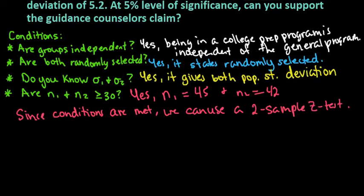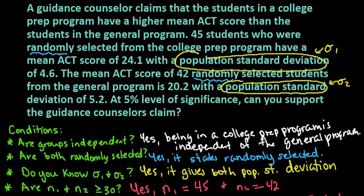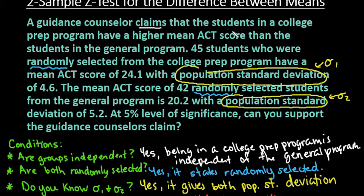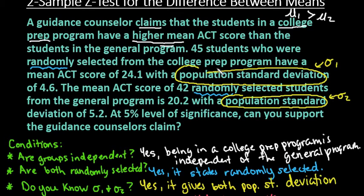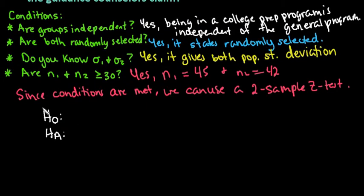It's always important to know which test you are running because there are different conditions for each. Our next step is to set up our null and alternative hypothesis and identify which one is the claim. The guidance counselor claims students in the college prep program have a higher mean — higher means greater than. So mu one represents the population mean for college prep students and mu two represents the general program.